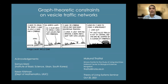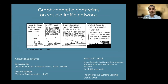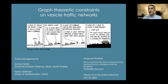I'm going to be talking about our work on vesicle traffic networks. I know many physicists may not know what those things are, so I'll give a biological introduction before jumping into all the details. I just want to start by saying that this work is done with Soumya Mani, a former PhD student who is now at the IBS in Korea, and Keshav Krishnan, a computer science student who is now doing his PhD at the Department of Mathematics at UIUC.